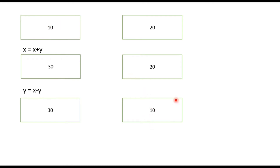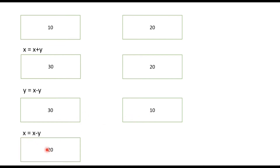Now we just need to update x. Step 3: x = x - y. Currently x is 30 and y is 10, so 30 - 10 = 20. X is now updated to 20, which was the original value of y. Using these three steps you can swap the values of two numbers.